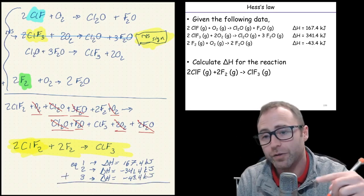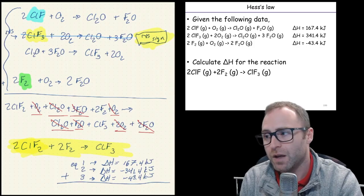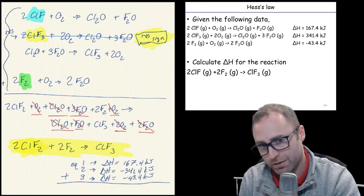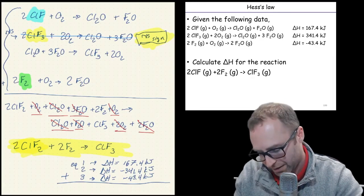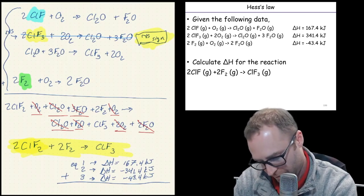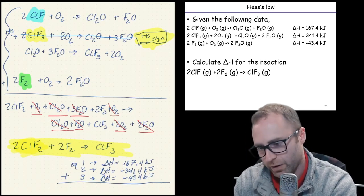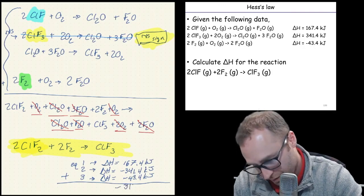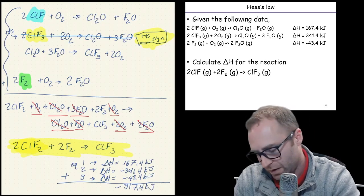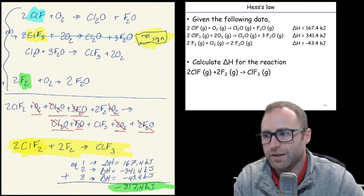We added all three equations up above to get our final equation that we wrote out below. So that means we're going to add all three of our delta H values that we have written out here. So mathematically we should end up with 167.4 minus 341.4 minus 43.4 equals negative 317.4 kilojoules. And that ladies and gentlemen is our final answer.